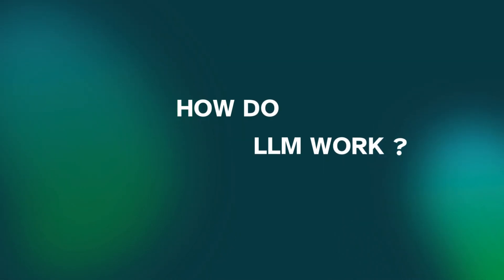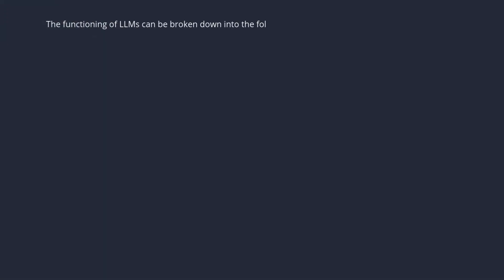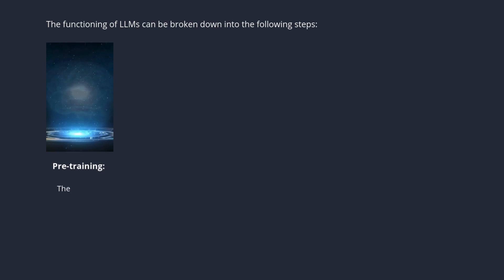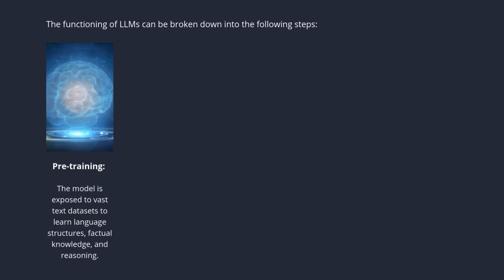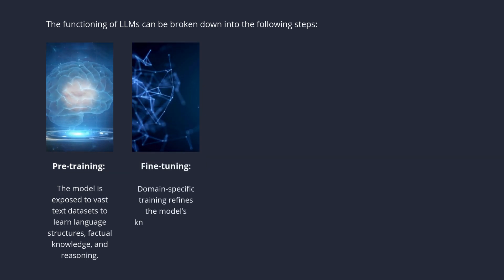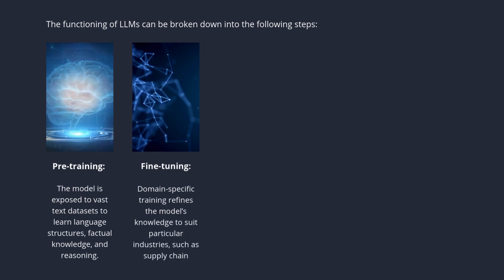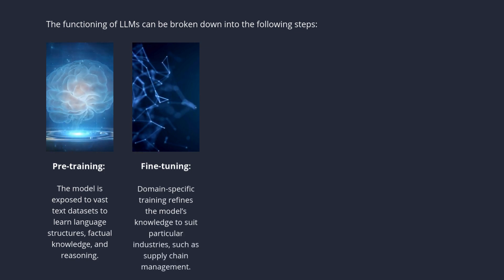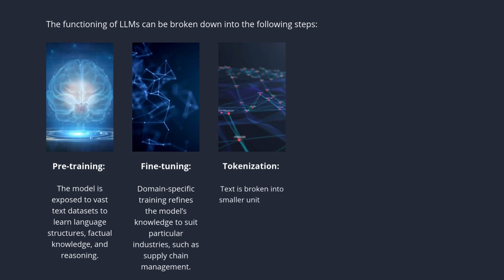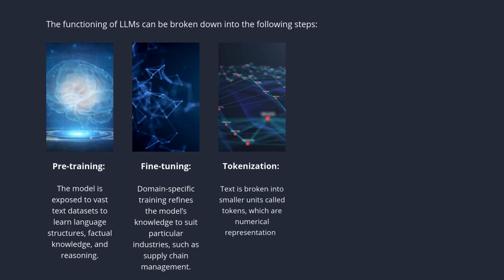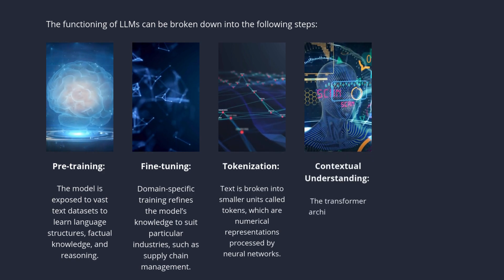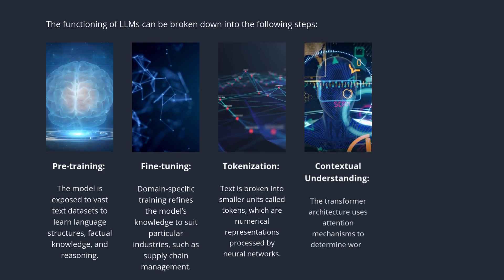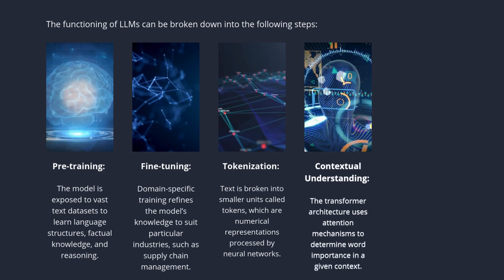How do LLMs work? The functioning of LLMs can be broken down into the following steps. Pre-training: the model is exposed to vast text datasets to learn language structures, factual knowledge, and reasoning. Fine-tuning: domain-specific training refines the model's knowledge to suit particular industries, such as supply chain management. Tokenization: text is broken into smaller units called tokens, which are numerical representations processed by neural networks. Contextual understanding: the transformer architecture uses attention mechanisms to determine word importance in a given context.